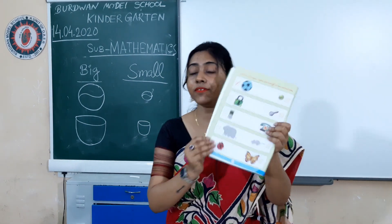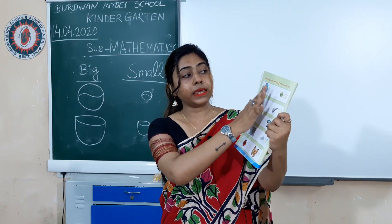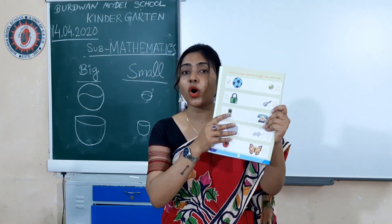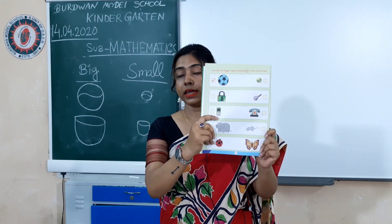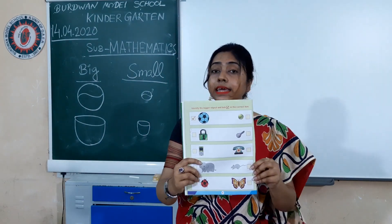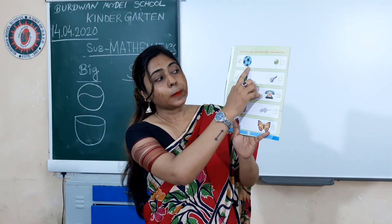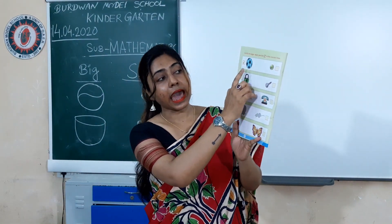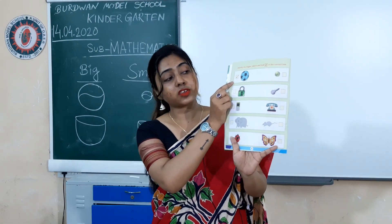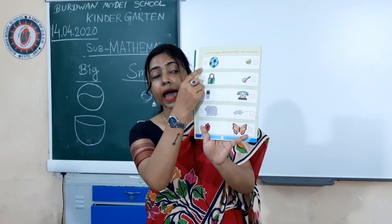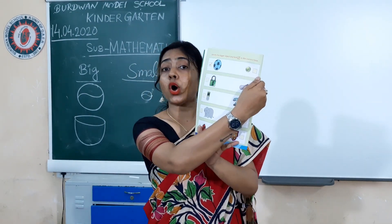Your first activity for today is this chapter: big, bigger, and smaller. This page has your first activity. How will you do it? You can tick and cross. Those things that are big — just put a tick. And those that are smaller — just put a cross.